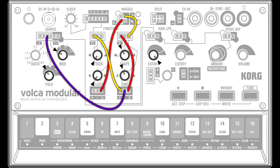The Function 2 time is being randomised for each cycle of the Function 1 attack-hold-release signal, because the Function 1 end trigger is connected to the Woggle trigger input and the Woggle stepped output is connected to the Function 2 time input. This causes a gate signal of random length or time to be sent to the Function 1 gate input, random within a range set by the time knob.